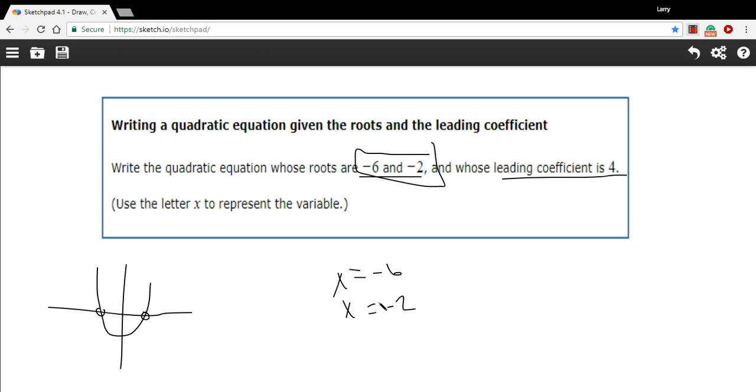What we want to do is find the factors now from these two equations, and we can do that by setting them equal to zero. So, to set x equals negative six equal to zero, what we'd do is we'd add six to both sides. And here we get x plus six equals zero. We'll do the same thing with this one. It requires adding two to both sides, and we're going to get x plus two equals zero.